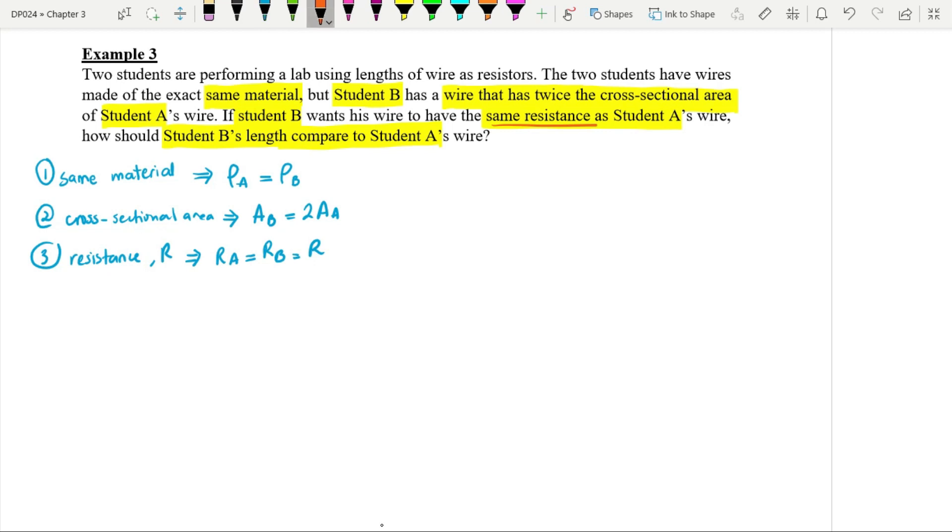And then number four, is there more information? That is the question. Compare the length of the wire for student A and student B. So in terms of length, we want to compare LA and LB. So basically, four important things.